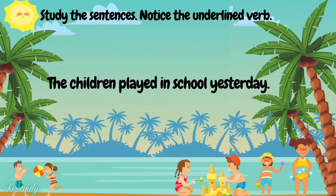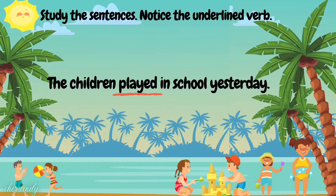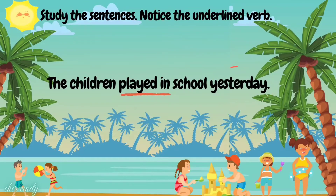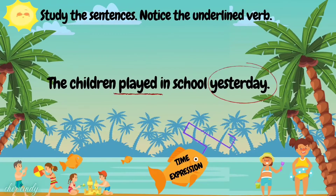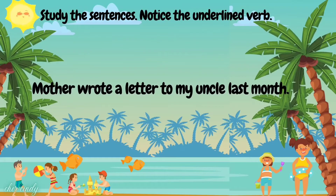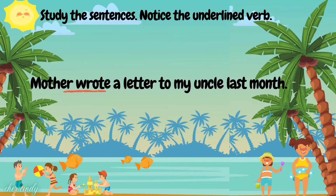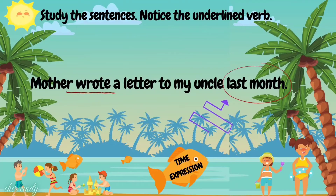Now let's study the sentences and notice the underlined verb. 'The children played in school yesterday.' The underlined verb is 'played,' and 'yesterday' is the time expression used to show it is in the past tense. Next: 'Mother wrote a letter to my uncle last month.' The underlined word is 'wrote,' which is already in the past form, and 'last month' is the time expression used.